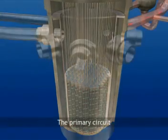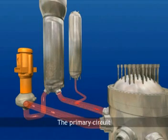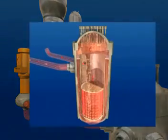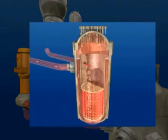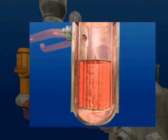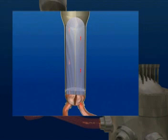The primary circuit is a closed circuit of pressurized water whose function is to extract heat from the nuclear reactor. This water enters the reactor vessel at 296 degrees Celsius. It's heated by contact with the fuel assemblies and exits at 327 degrees.